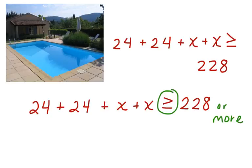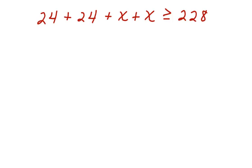Now, let's combine like terms so we can solve this inequality. Here's our inequality once again. 24 plus 24 is 48, plus x plus x, which is 2x, is greater than or equal to 228.